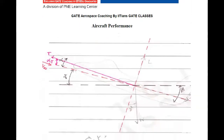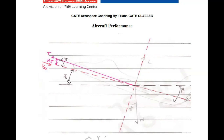Look at this figure where the aircraft is climbing at an angle gamma to the horizontal axis, climbing at a speed V-infinity which is the free-stream velocity. This red dotted line is your flight path direction or free-stream velocity direction axis. This black dotted line is your horizontal axis. This black line is the chord line, which is the line joining the leading edge and trailing edge of your aircraft.